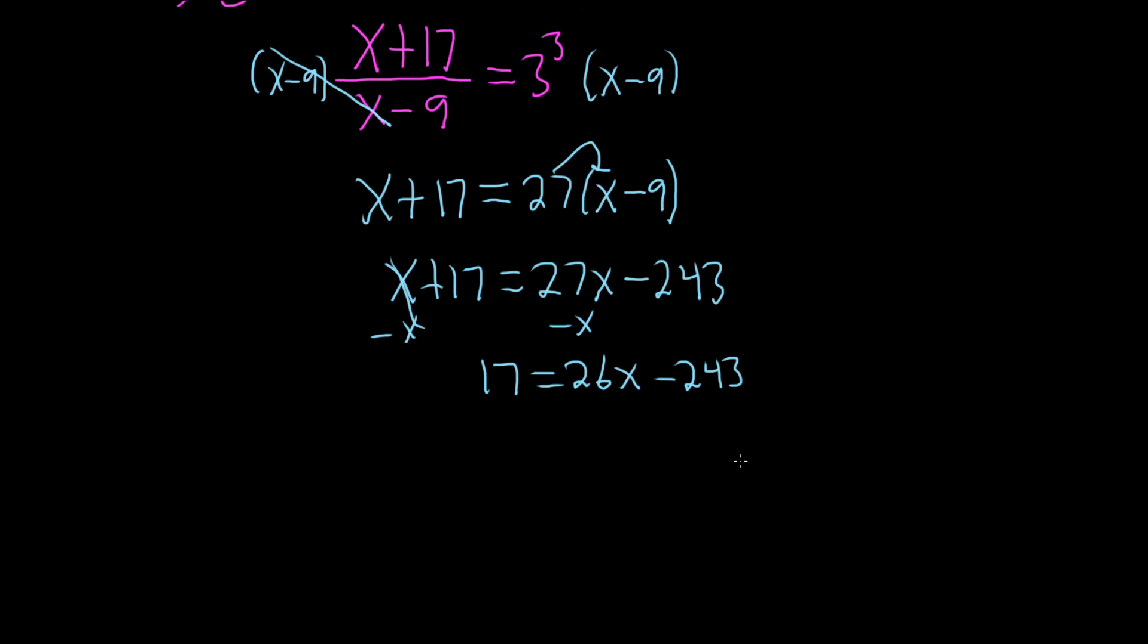If 17 equals 26x minus 243, then now let's add that 243. It's funny how I don't like negative numbers. It's common, I think, for people to say, I don't want the negative there. So instead of subtracting the 27, we subtracted the x. It's kind of weird how that works.